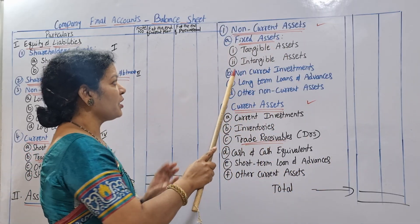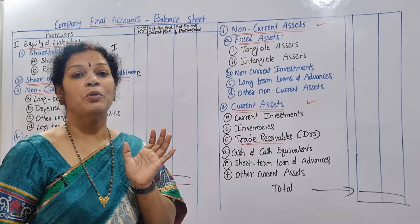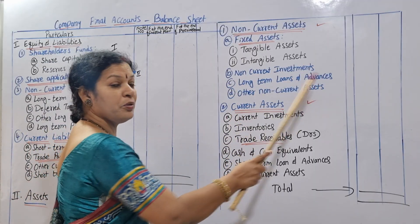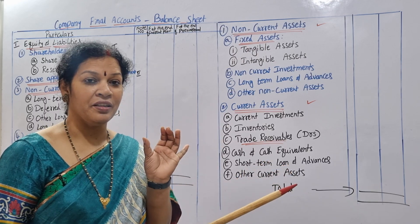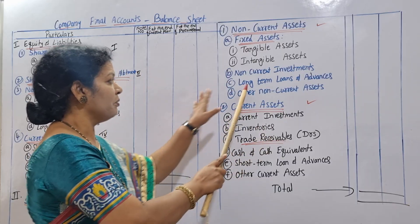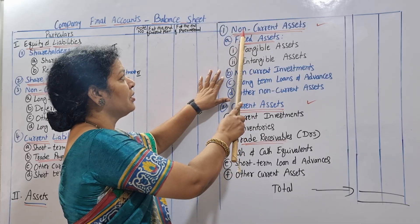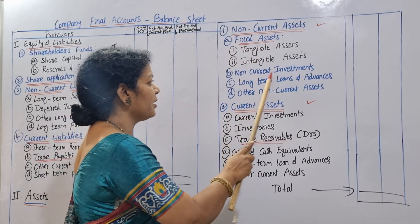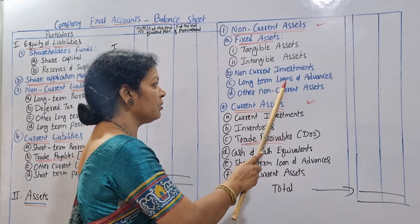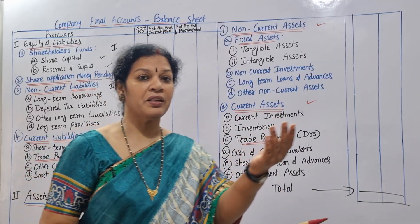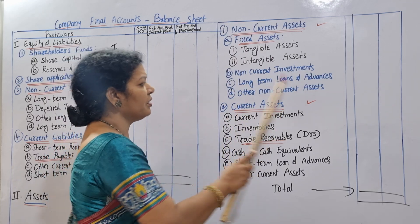The second non-current asset is non-current investments — investments of more than one year. Third is long-term loans and advances, where loans and advances are for more than one year. Fourth is other non-current assets.